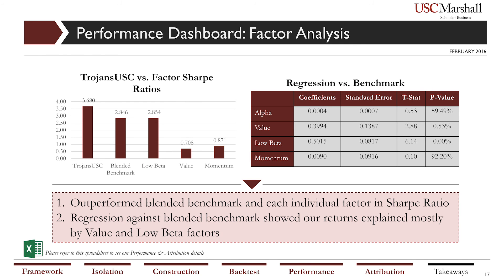Finally, we analyzed our performance in relation to the three pillars of our strategy. We created a blended benchmark combining ETFs to represent longs and shorts in our three factors and calculated the Sharpe ratios of this benchmark as well as each factor on its own. Our portfolio outperformed each of these factors individually. We then ran a regression of our portfolio against the blended benchmark; our value and low beta factors were statistically significant in explaining our returns. We found it interesting that momentum did not significantly contribute and would like to investigate this further with more data.